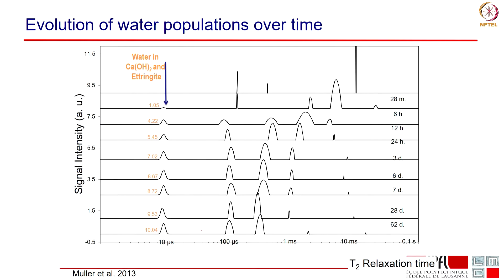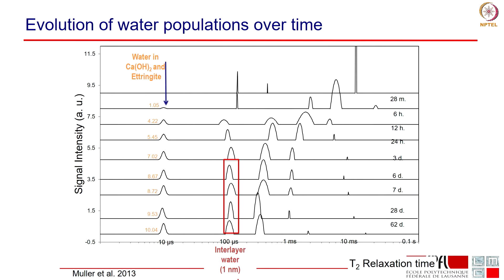We can also see the other populations evolving over time. By deduction, since we know the crystalline hydrates signal, we can identify the signal for the interlayer water — the water in the CSH interlayer. CSH is a layer structure: we have layers of calcium-oxygen sheets and between these sheets we have water molecules. This interlayer water appears at an equivalent pore size of roughly 1 nanometer.